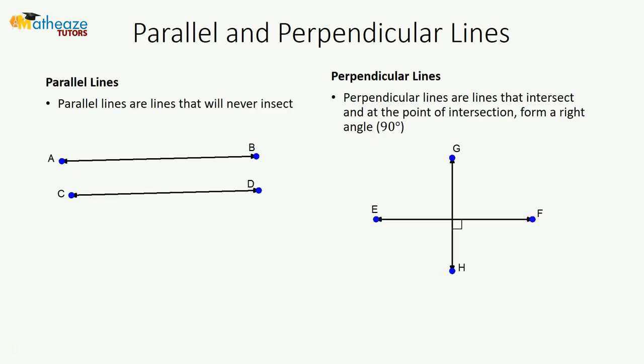Parallel lines are two lines or a set of lines that will never intersect, regardless of how long they are. Perpendicular lines are lines that intersect and, at the point of intersection, form a right angle, which is 90 degrees.